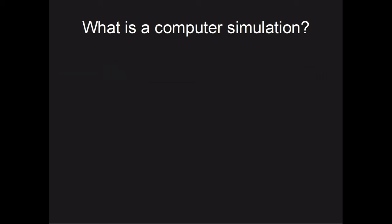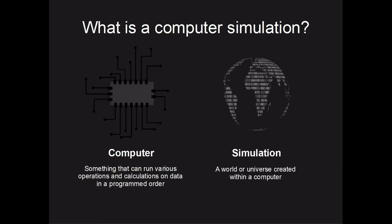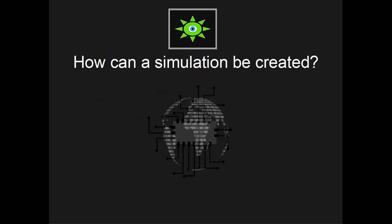The term 'computer simulation' generally refers to something being represented through a computer or computation. A computer here refers to anything that can run a set of operations — generally mathematical operations — on data in a set order. Simulation is really just another word for copying or representation, but in more basic terms it is just a copy of the universe inside a computer. In this video we are going to examine how a simulation effectively creates a copy of what it is representing, and how a universe can make a copy of itself through a simulation.